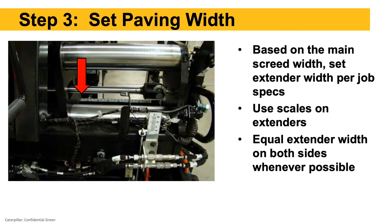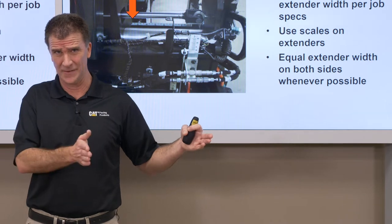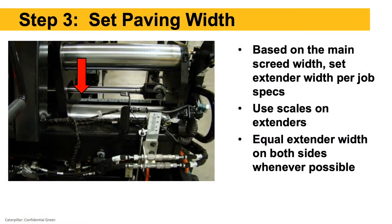Step 3: set our paving width. On a hydraulic extendable screed — for example, a 10-foot wide main screed paving 13 feet wide — ideally put a foot and a half extension on the left side and a foot and a half on the right side, doing equal extension on both sides whenever possible. Sometimes a shoulder break or other conditions require all the extension on one side, but whenever possible use equal extension on both sides.